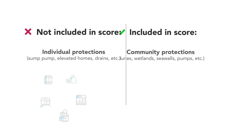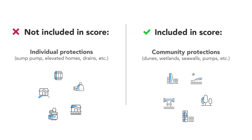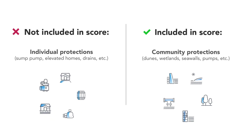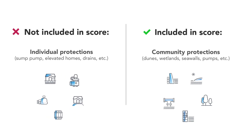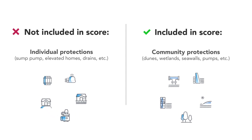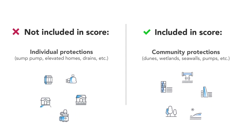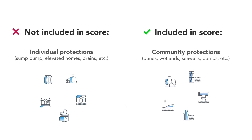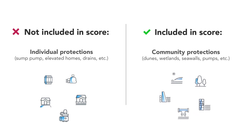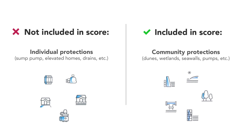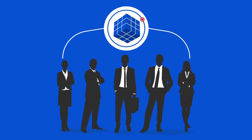Individual home protections, such as sump pumps, drains, or raising the home on stilts, are not incorporated into a property's Flood Factor because this information is not readily available nationally. Flood Factor does capture thousands of community flood prevention measures, including features like dunes and wetlands, as well as geoengineered efforts like large seawalls and pumps. Flood Factor is working with local experts to continue adding missing features.